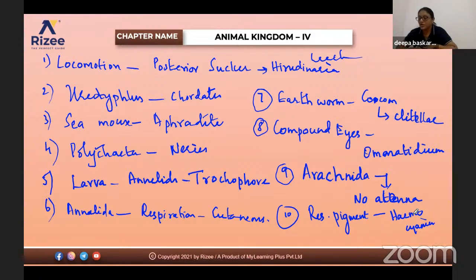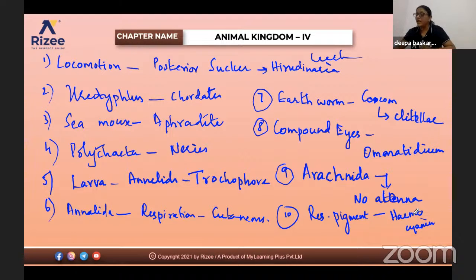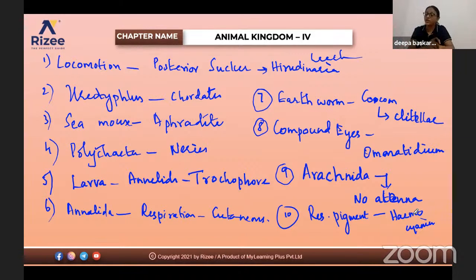In phylum Arthropoda, respiration occurs through both trachea and gills. An animal observed as bilaterally symmetrical, metamerically segmented, and triploblastic was identified as an arthropod. The character that should have been identified first to call it an arthropod is jointed appendages — that is the unique feature of arthropods. Once jointed appendages are found, you can confirm it belongs to phylum Arthropoda.